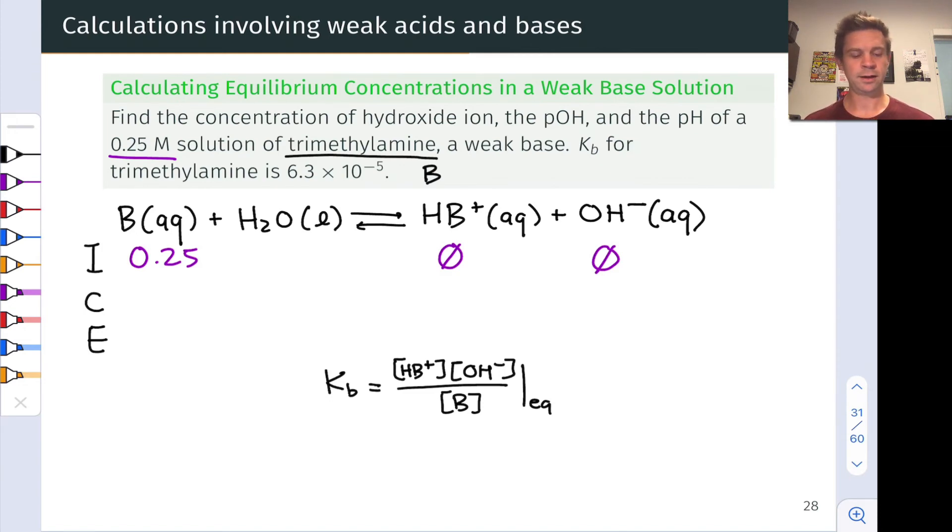0 initial hydroxide because 0.25 is much larger than 10 to the negative 7. Thinking about Q versus K, the reaction will run forward, so we'll lose reactant and gain products: minus X, plus X, and plus X. We generate the equilibrium line by adding the initial and change lines together.